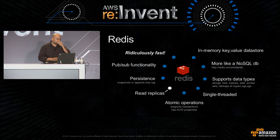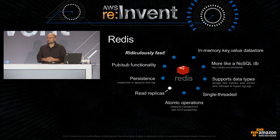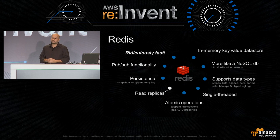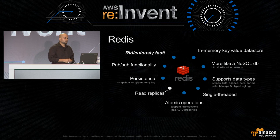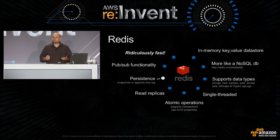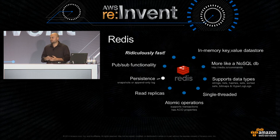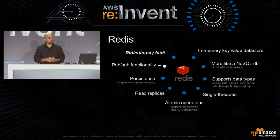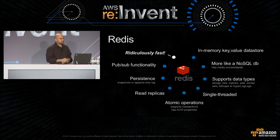Redis supports read replicas, so you can have a primary and several read replicas. If you're already using RDS with read replicas, it sort of brings it up into your cache layer — natively supported out of Redis. A huge one is that there's a persistence aspect: you can take snapshots and backups and save that state of your cache to disk. It has pub/sub functionality that we'll demonstrate in a bit. And it's ridiculously fast.